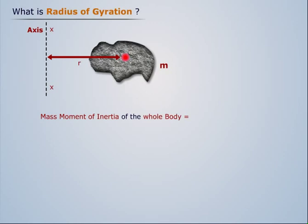Now if the mass moment of inertia about the XX axis is I, then the square root of the ratio between the moment of inertia and mass will give us the radius of gyration.